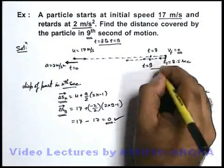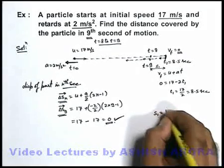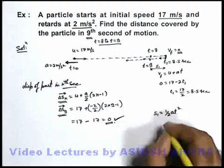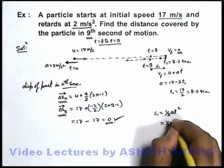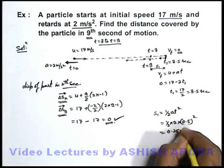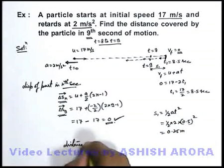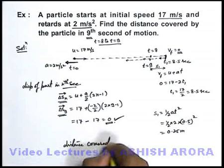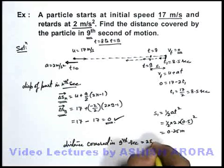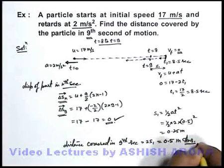If this distance is s₁, then s₁ can directly be written as half at squared, as initial speed here is zero. So this is half times 2 times (0.5)² . We can directly write distance covered in ninth second is 2s₁, that is equal to 0.5 meters, which is the answer to this question.